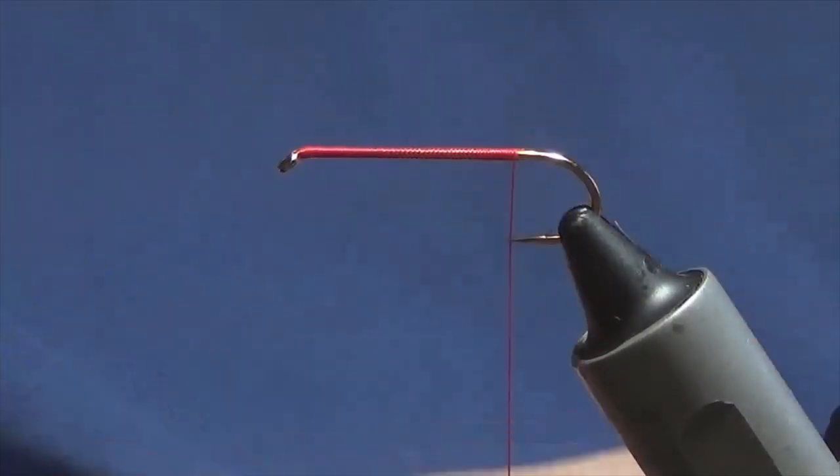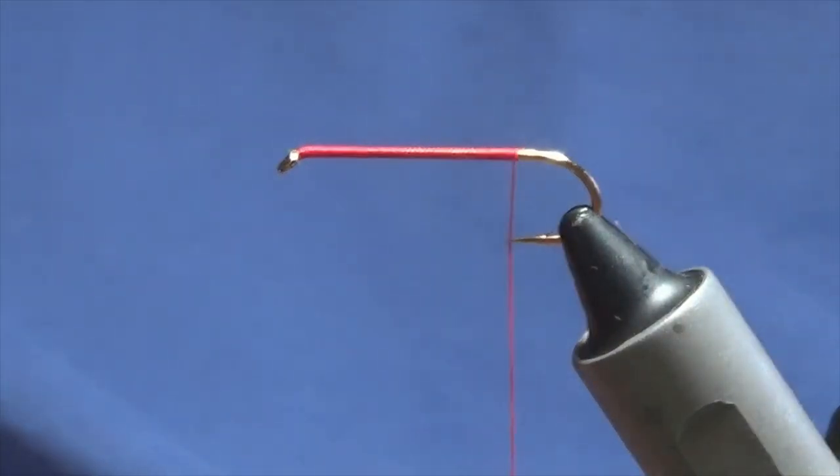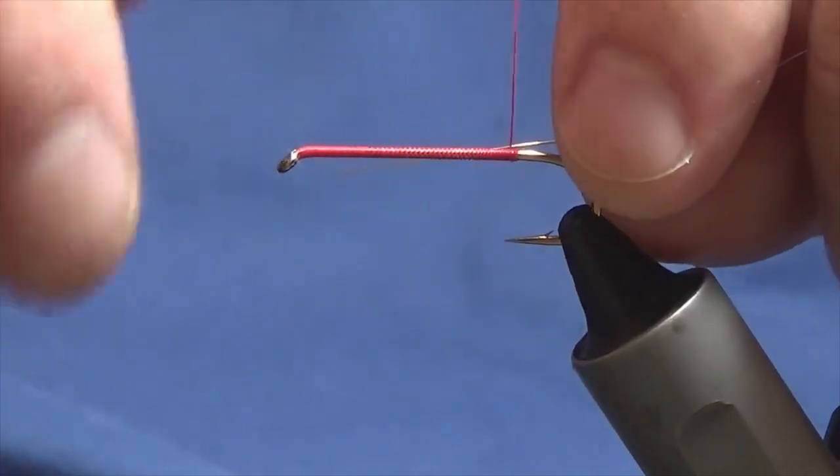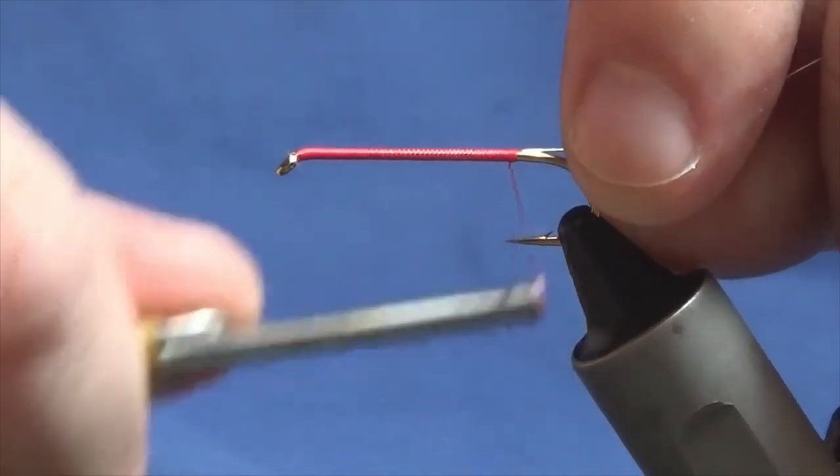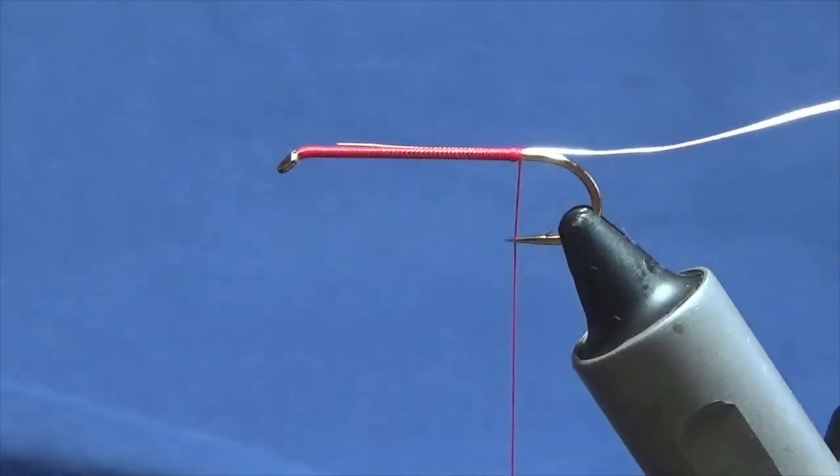Sorry, I've just brought the thread down in line with the point of the hook. The rib on the fly is just going to be the ultra wire in silver. I'm going to take a good length off now.